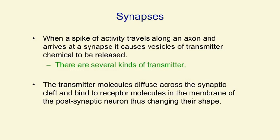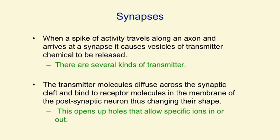The transmitter molecules diffuse across the synaptic cleft and bind to receptor molecules in the membrane of the postsynaptic neuron. By binding to these large molecules in the membrane, they change their shape, and that creates holes in the membrane. These holes allow specific ions to flow in or out of the postsynaptic neuron, and that changes their state of depolarisation.